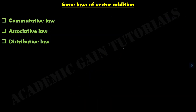Now we will discuss some laws of vector addition. The first one is the commutative law. Suppose P and Q are two vectors. Then by the commutative law, we can write vector P plus vector Q equals vector Q plus vector P. This is known as commutative law.